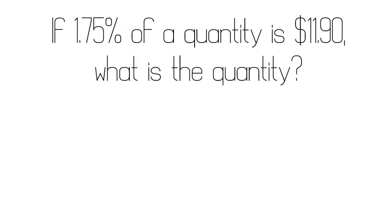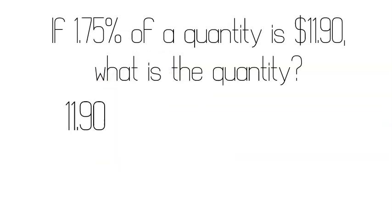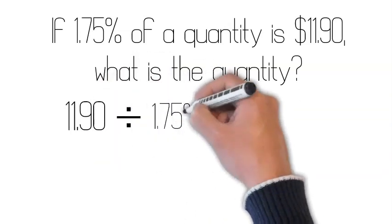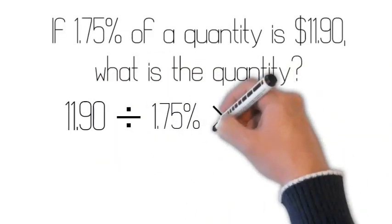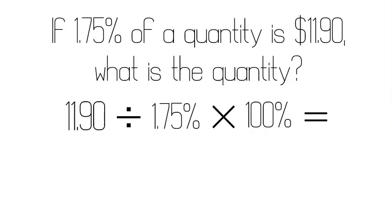Back to our question. Let's take our quantity, which is $11.90, divide by what we've got, which is 1.75%, and times by what we want, which is 100%. But you know what? We don't really need that 100% because that's the same as multiplying by 1.